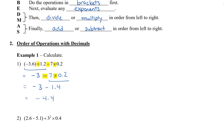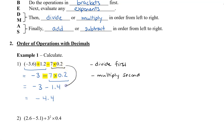Let's review what we did. We did the division first, then we multiplied second. In this question, because the 7 times 0.2 doesn't affect the other numbers, we could actually have done 7 times 0.2 right at the beginning — that would be 1.4 — and then skipped ahead. But if you want to do only one operation at a time, that is totally fine. And then the last thing we do is subtract.